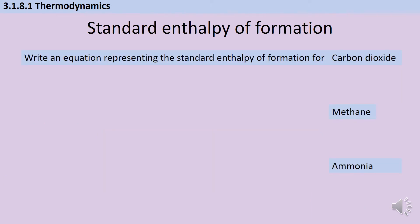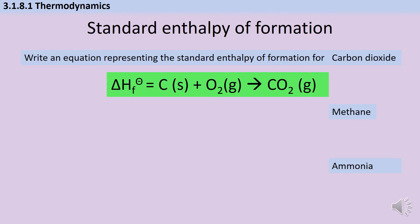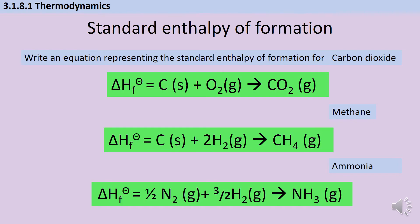Hopefully you managed to write down the following three equations. The first two aren't particularly tricky, although hopefully you remembered that carbon is a solid at room temperature. The trick with the third one is that this is a standard enthalpy of formation, so we need to be making one mole of ammonia — therefore we need half a mole of nitrogen and three-halves of a mole of hydrogen. It wouldn't be appropriate to have one mole of nitrogen reacting with three moles of hydrogen to make two moles of ammonia.